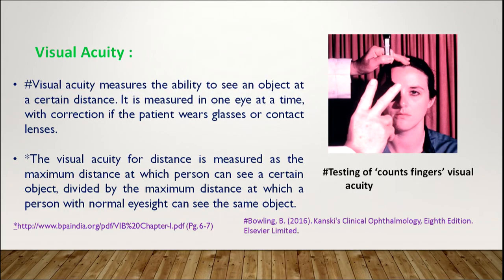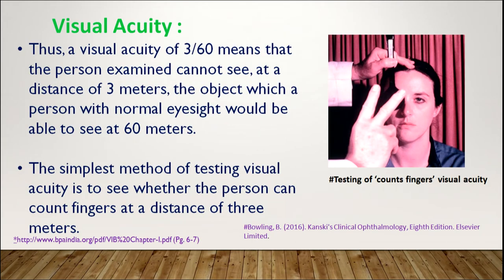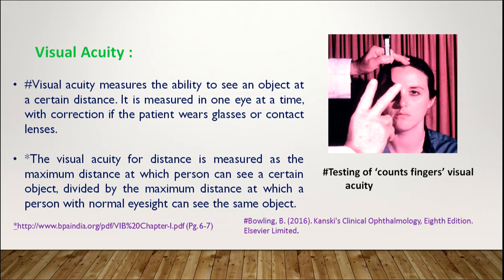Let us understand the term visual acuity, used to define blindness and low vision. Visual acuity measures the ability to see an object at a certain distance. It is measured in one eye at a time, with correction if the patient wears glasses or contact lenses. The visual acuity for distance is measured as the maximum distance at which a person can see a certain object divided by the maximum distance at which a person with normal eyesight can see the same object. As seen in the picture, visual acuity can be measured by testing whether a person can count fingers at a distance of 3 meters. A visual acuity of 3/60 means the person cannot see at 3 meters what a person with normal eyesight can see at 60 meters, and is therefore generally referred to as blind.